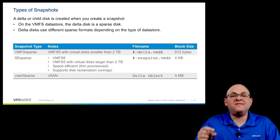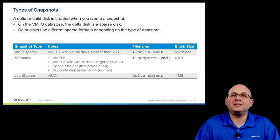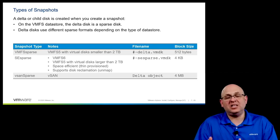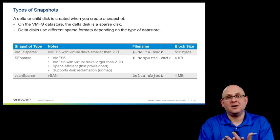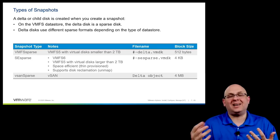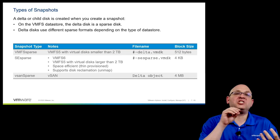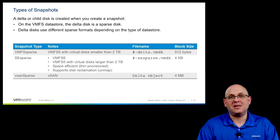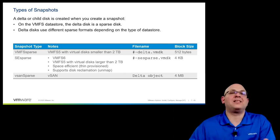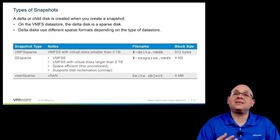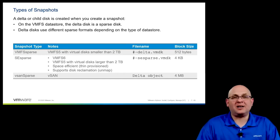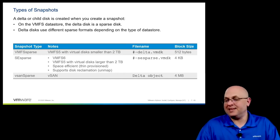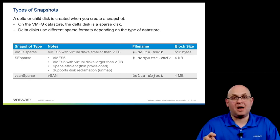In a vSAN datastore, we use a vSAN sparse snapshot, which works a bit differently. Rather than capturing changes to the delta disk, we write the old data to the delta disk and make all changes on the original base disk. This improves snapshot performance. In the event we want to restore original data, we have it in a separate file that we can copy back into the original base disk. This is a delta object in the object-based system of vSAN, and uses 4-megabyte block sizes.